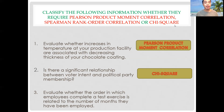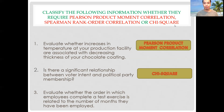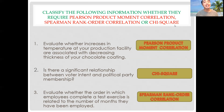Last: evaluate whether the order in which employees complete a test exercise is related to the number of months they have been employed. What statistical treatment should we use — Pearson, Spearman, or chi-square? The answer is Spearman rank-order correlation, since we will be dealing with order data, classified as an ordinal variable.